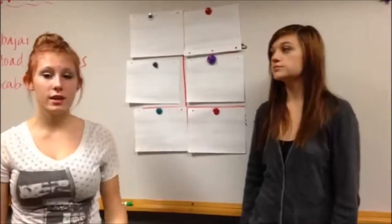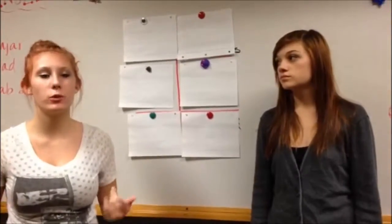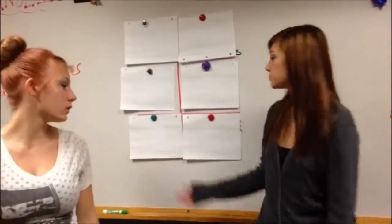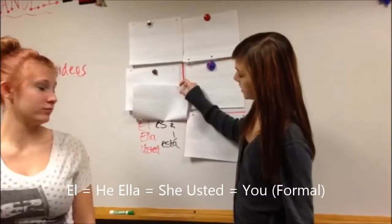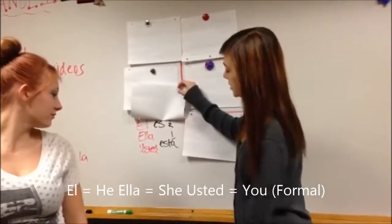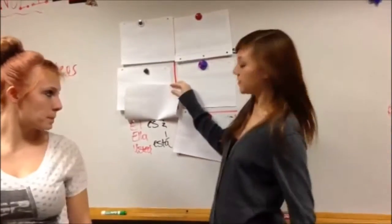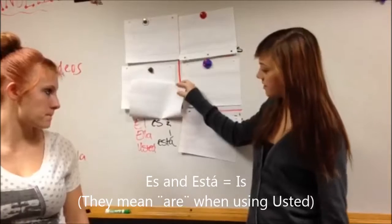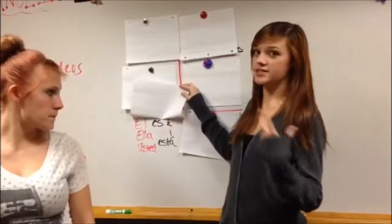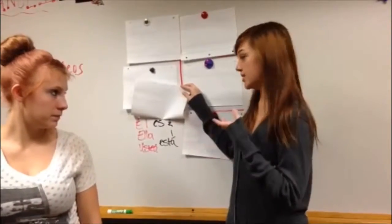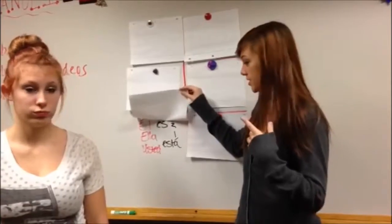The next subject pronoun we will be going over is for he, she, and the formal you. 'Él' is he, 'ella' is she, and 'usted' is the formal you. The verbs for this are 'es' and 'está.' We can remember that 'es' sounds like 'is,' so 'he is' or 'she is' — that makes it easier to understand.